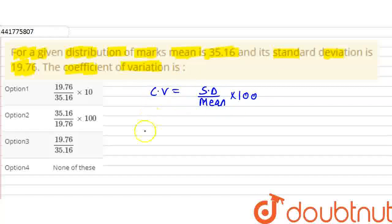So here is the coefficient of variation. If you put the value of standard deviation, the value of standard deviation is 19.76. So here is the coefficient of variation and the mean of given distribution is 35.16 into 100. So this is the coefficient of variation value.